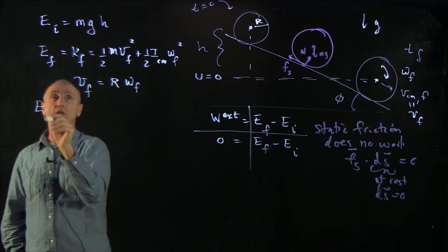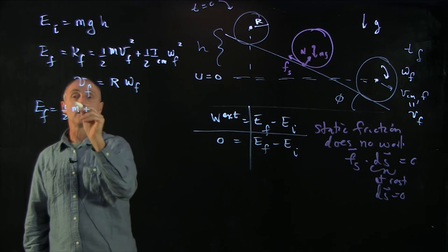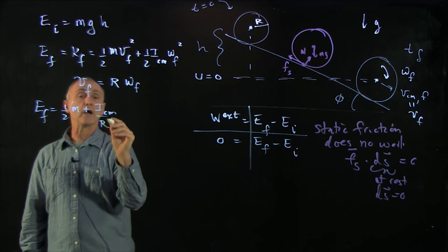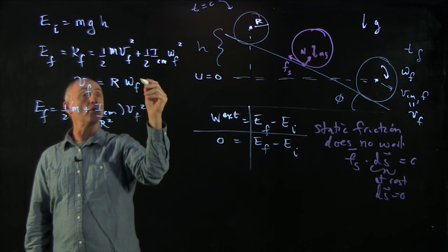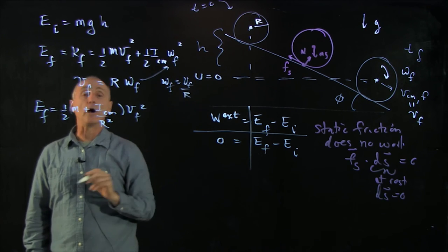So I can write E final as 1 half m plus I cm over r squared times v final squared, where I'm just replacing omega final equals v final over r.